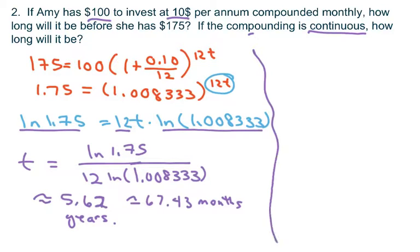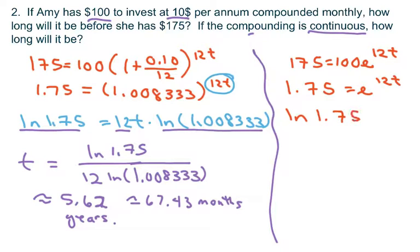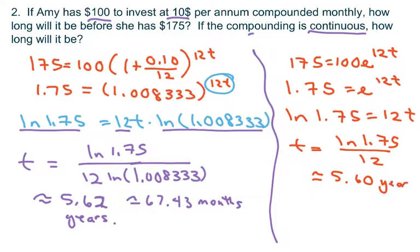And now we're going to do continuous. So we do the same thing, but that's with e to the 0.10t. So you get 1.75 equals e^0.10t. You take your natural log and then solve for t. So t equals ln 1.75 over 0.10, which is approximately 5.60 years. Multiply that by 12. That would be about 67.15 months.